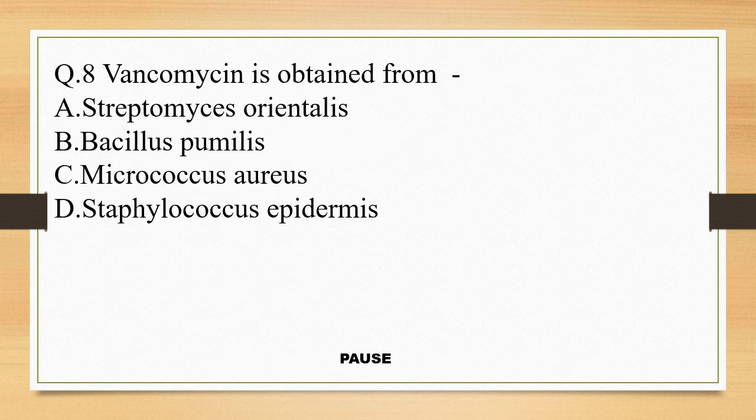Question 8. Vancomycin is obtained from: option A, Streptomyces orientalis; option B, Bacillus pumilus; option C, Micrococcus aureus; and option D, Staphylococcus epidermis. And the right answer is option A, Streptomyces orientalis.